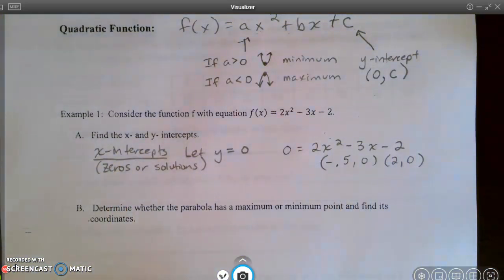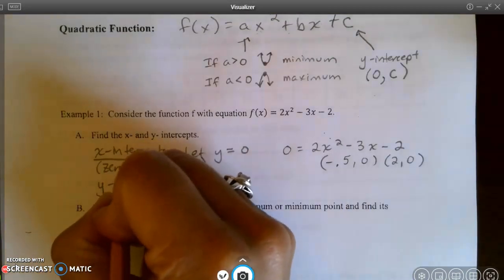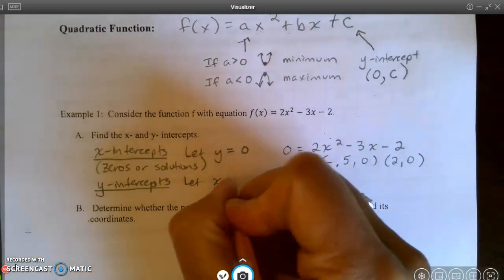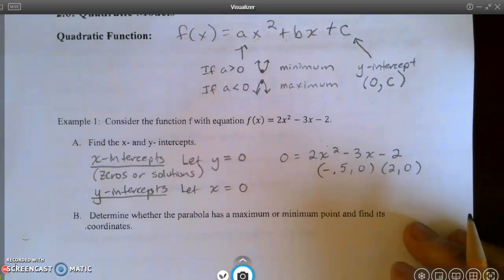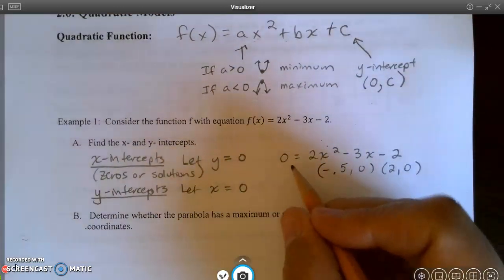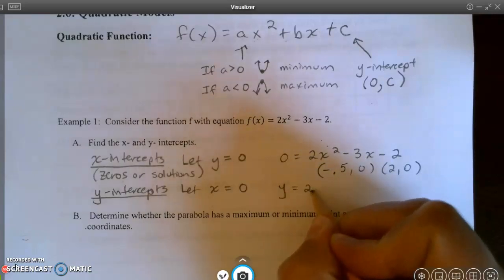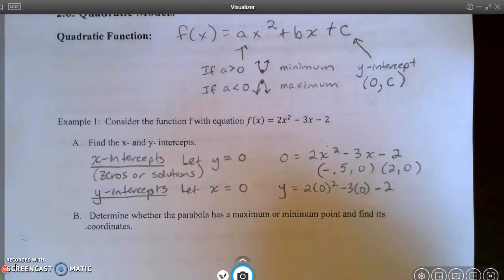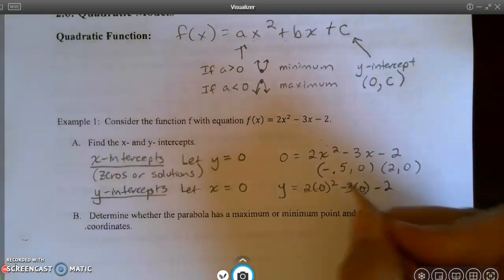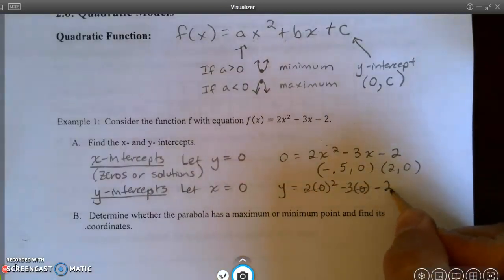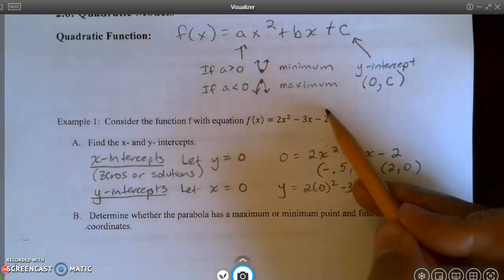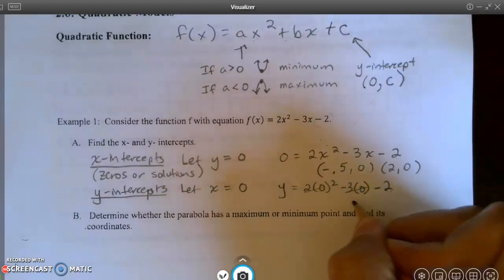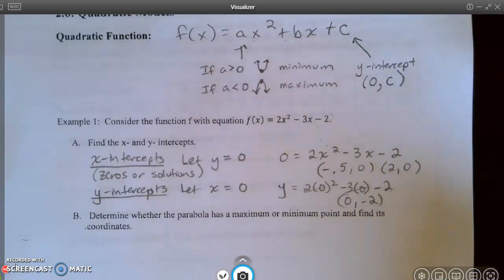Now I want to find my y-intercept. And y-intercepts are found by letting x equal zero, because you cross the y-axis when x is zero. So that makes it pretty easy. Y just equals 2 times 0² - 3 times 0 - 2. Well, all of these just cancel out, and I'm left with -2, which makes sense. Remember, we said this c-value is the y-intercept. So y equals -2, so (0, -2) is my y-intercept.